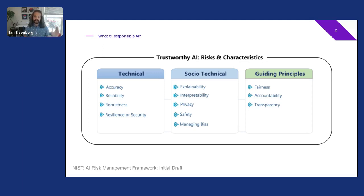At the other end of the spectrum are guiding principles. Guiding principles are the highest level ethical principles that an organization aspires to, and are often disconnected from day-to-day development. Sometimes there is an AI ethics or governance team that tries to apply these principles with varied success depending on their integration with the rest of the organization. How do you operationalize transparency? It's not going to be as straightforward as evaluating the accuracy of the system.